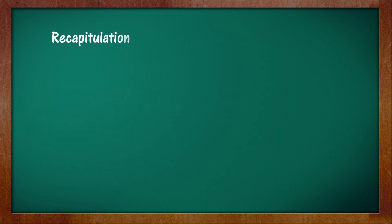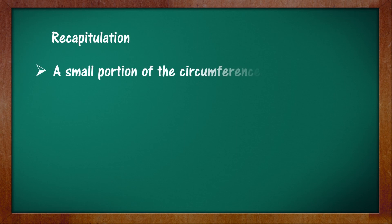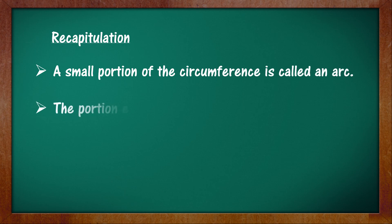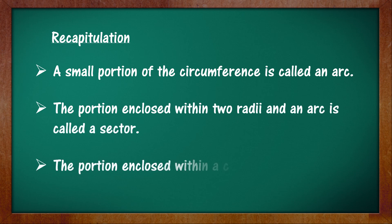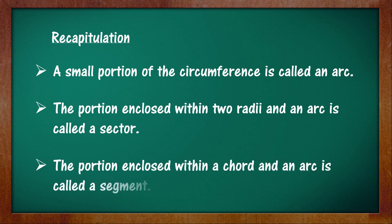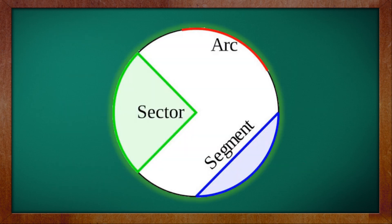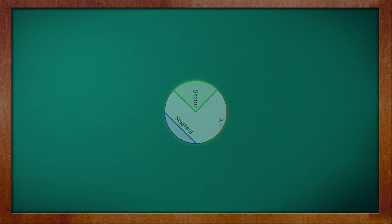A quick recapitulation before we end: a small portion of the circumference of a circle is called an arc; the portion enclosed within two radii and one arc is called a sector; and the portion enclosed within a chord and an arc is called a segment.